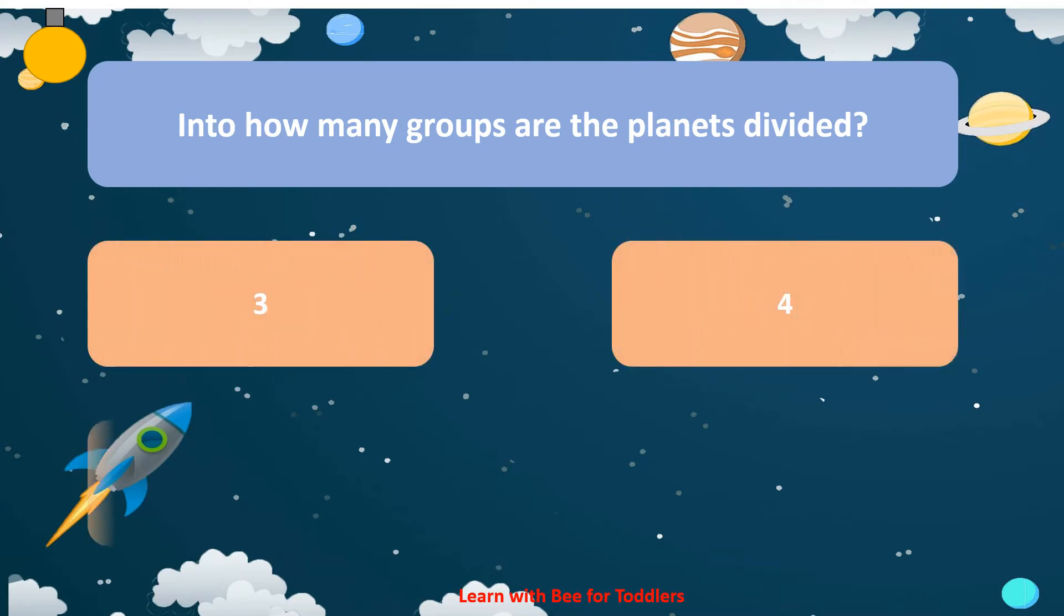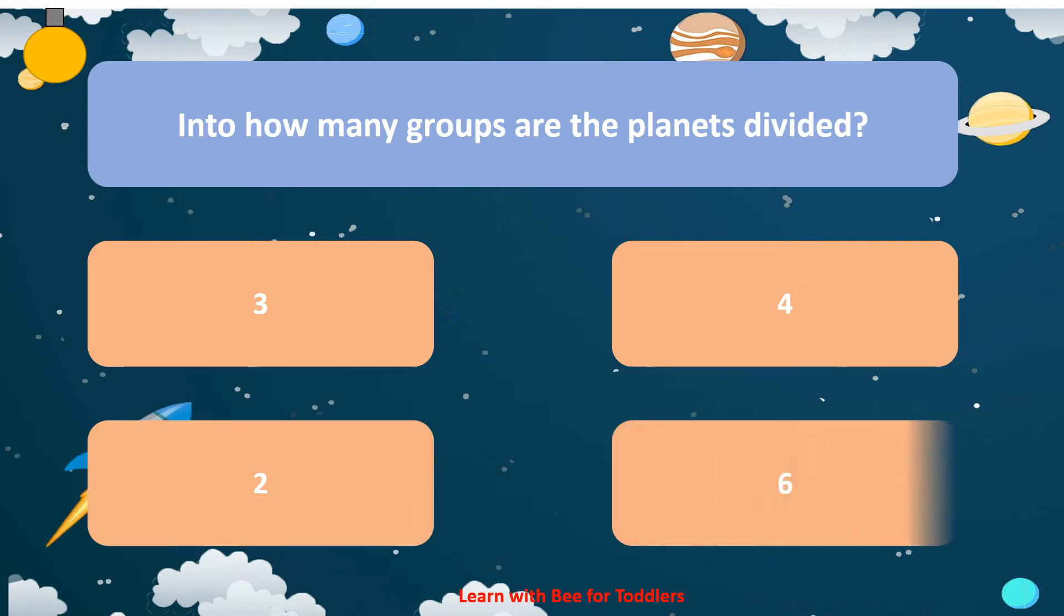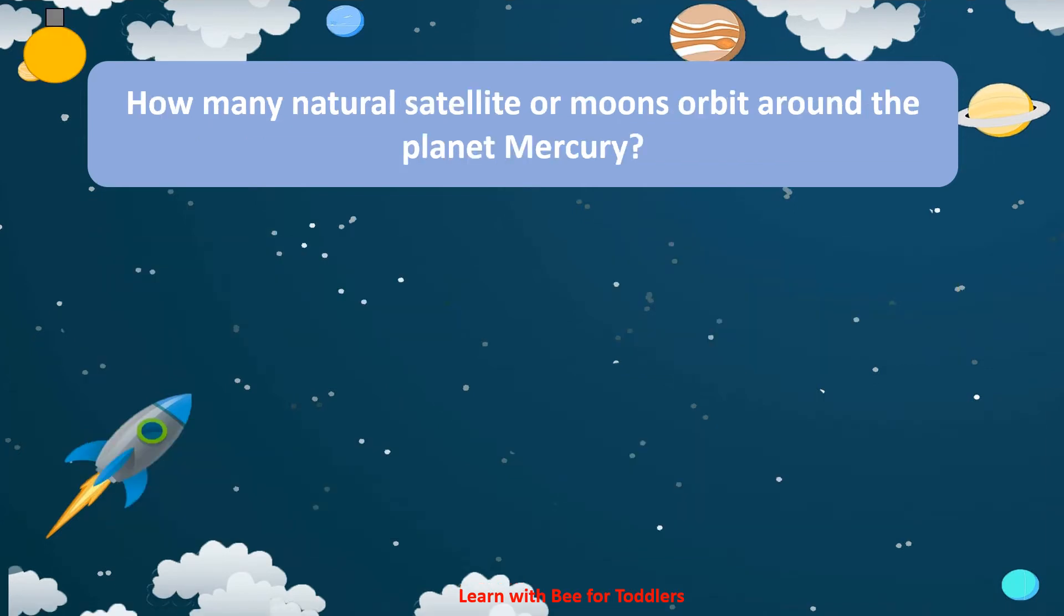4. 2. 6. 2. How many natural satellites or moons orbit around the planet Mercury? 3.